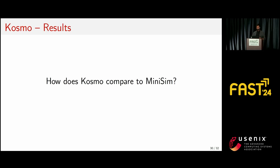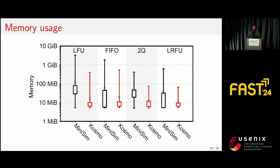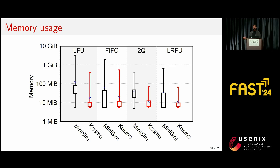How does Cosmo compare to MiniSim? Using the same 52 access traces with 126 billion total accesses and measuring high-water marks for both, Cosmo uses significantly less memory — note the logarithmic scale. Overall, Cosmo uses roughly 3.6 times less memory than MiniSim on average, and up to 36 times less in the extreme case. Importantly, when generating MRCs for multiple eviction policies in parallel in real time, memory costs must be summed across policies, so 1–2 gigabytes per policy quickly adds up for 10 different policies.